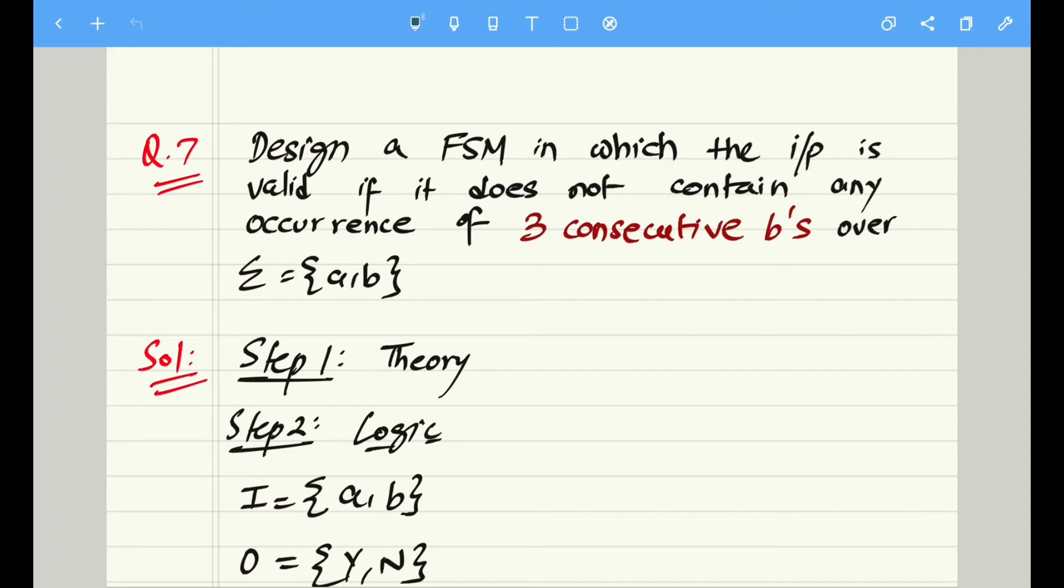...if it does not contain any occurrence. Read the question once again: if it does not contain any occurrence of three consecutive b's over the input a comma b. So as discussed in the previous problem, if we are having a trap state, it has to be a final state as well as all the inputs are getting trapped inside it.